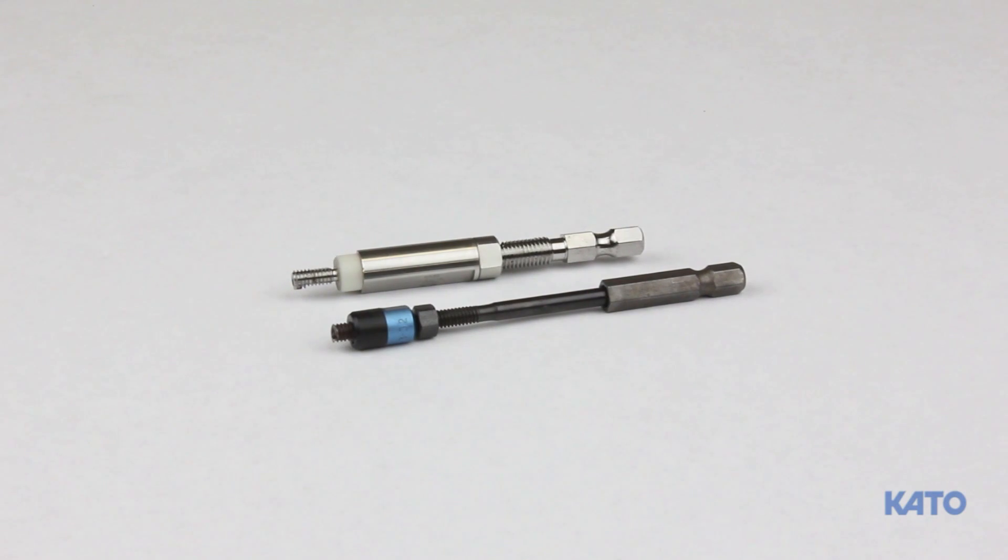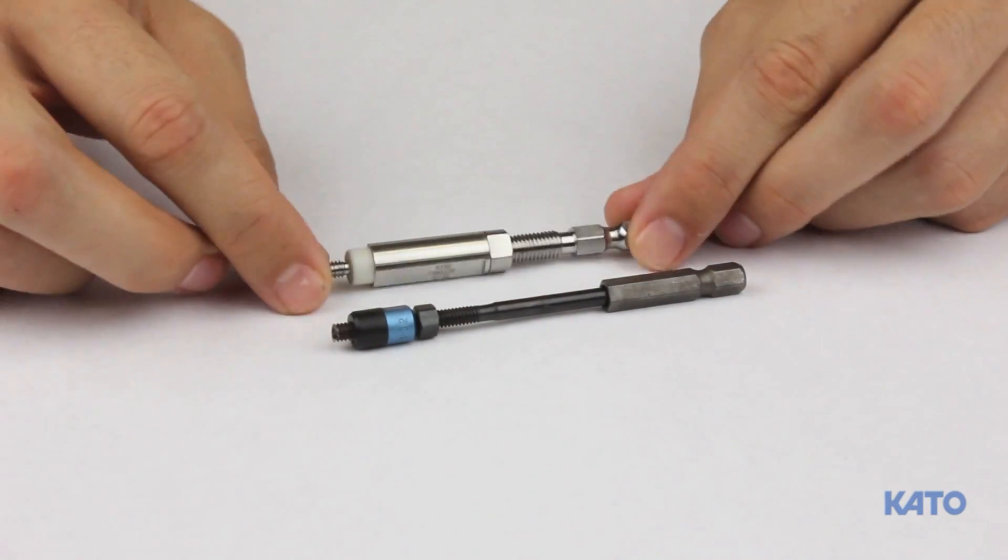The final component is the installation mandrel assembly. This is the part you'll swap out for insert types and different thread sizes. The Kato Hex electric tool can install both tangless and tanged inserts. Here we have two different mandrels. This one is for tangless, and this one is for tanged.